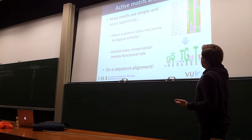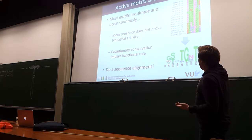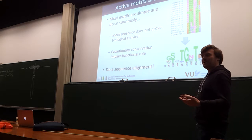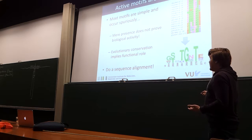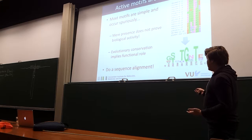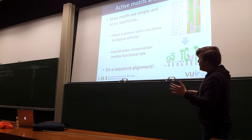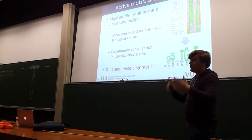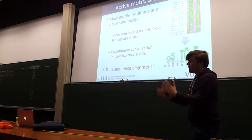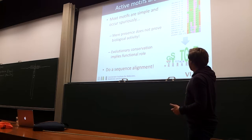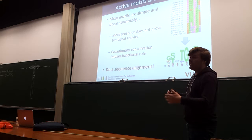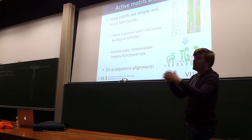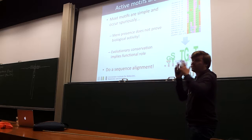If you do a sequence alignment, you can see that this G is probably important and part of the motif. Usually what you would do to see whether a motif is active or whether it's just there by chance is to align a number of sequences and then generate this kind of plot. You can see which motifs are conserved and which are not — those that are conserved are probably active.